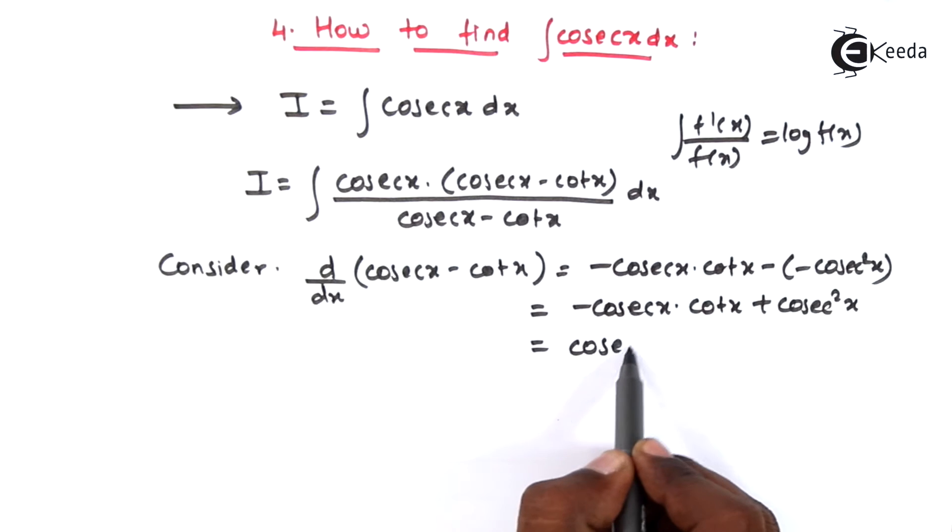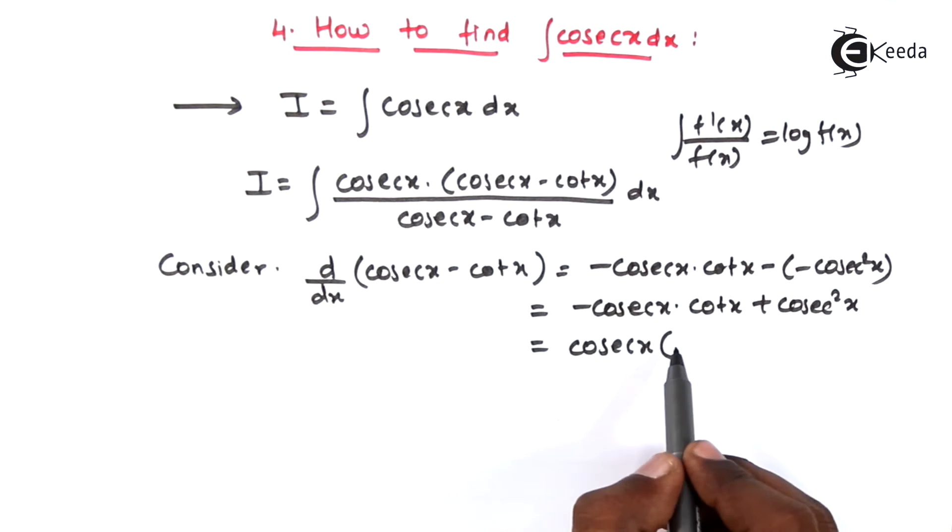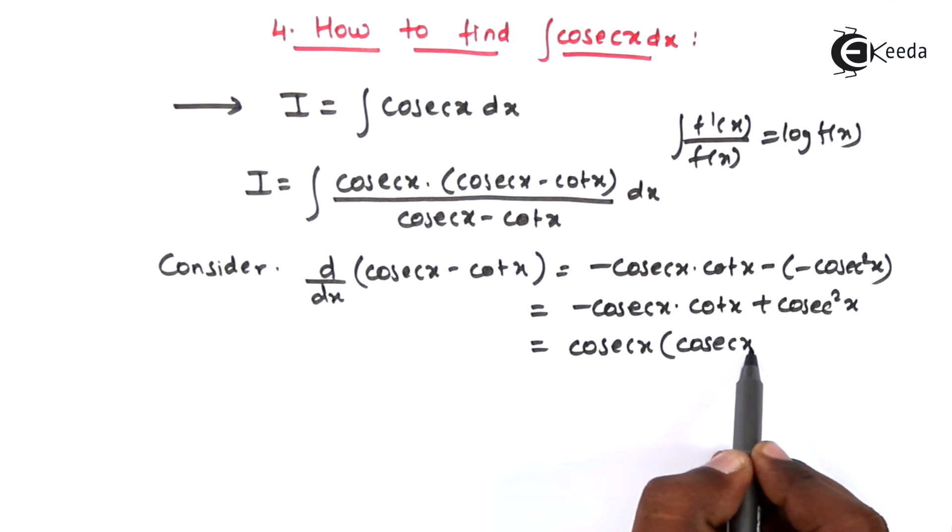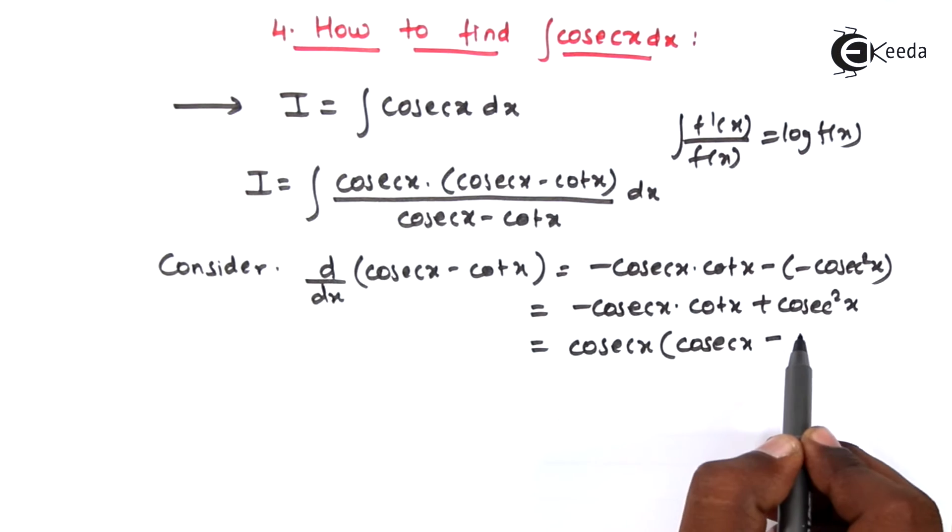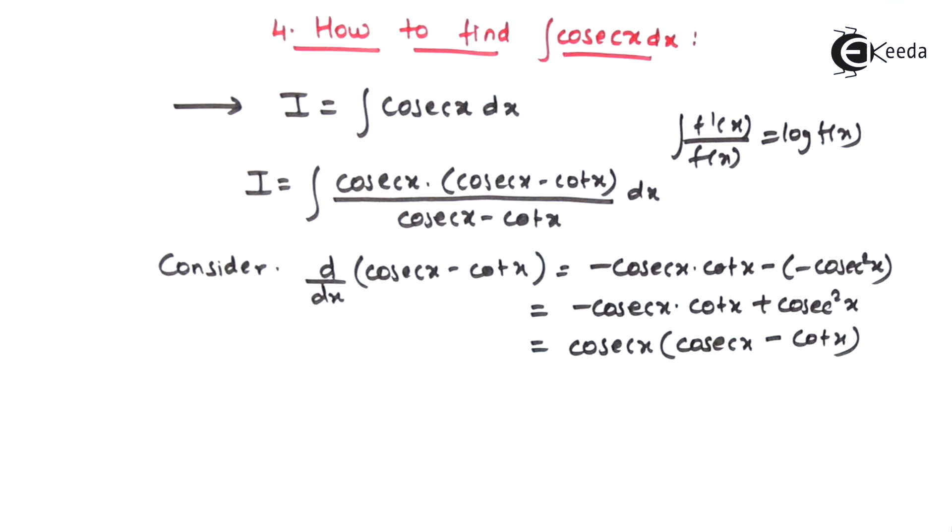Taking cosec x common, we have one cosec x left here followed by a minus sign and a cot x. If you see friends, we have got the numerator.